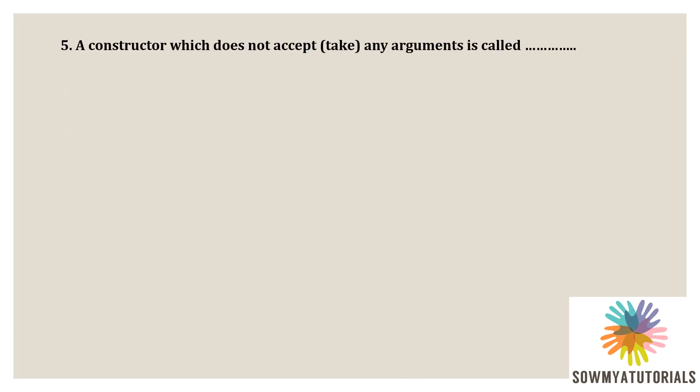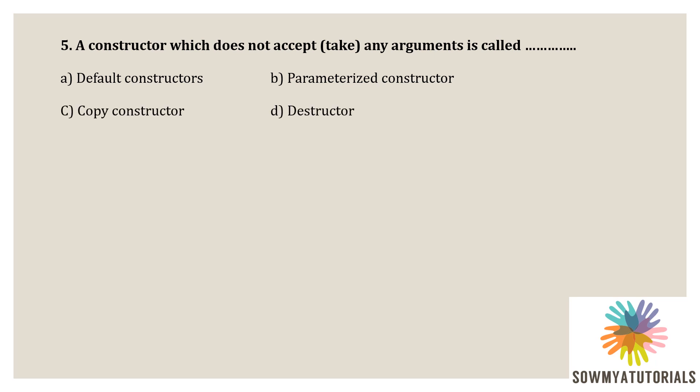Next question: a constructor which does not accept any arguments is called what? Options: A) default constructor, B) parameterized constructor, C) copy constructor, D) destructor. A constructor which does not accept any arguments is also called a zero argument constructor. It is also called a default constructor, so the correct option is default constructor.